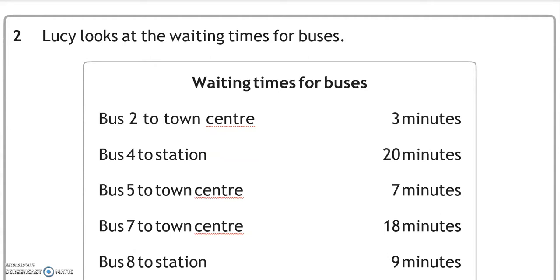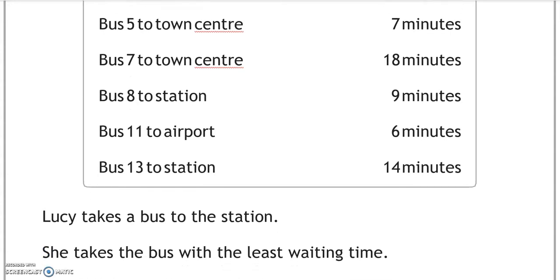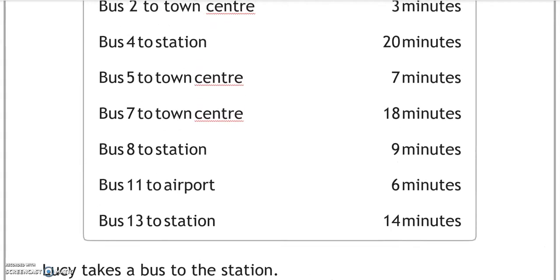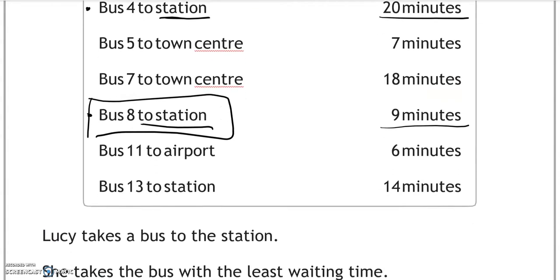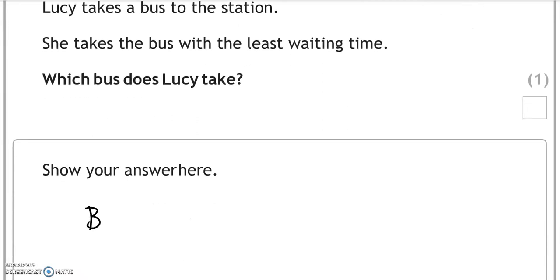Lucy looks at the waiting times for buses. Lucy takes her bus to the station. She takes the bus with the least waiting time. Which bus does Lucy take? So she's going to the station, so it's going to be either bus 4 or bus 8. So bus 4 waiting time is 20 minutes, bus 8 is 9 minutes. So the answer is bus 8 because the waiting times are shorter.